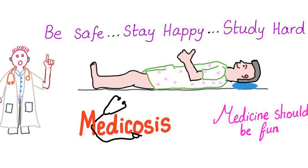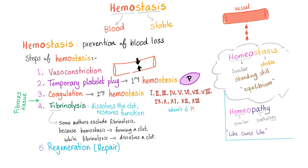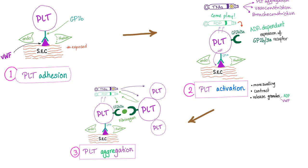As you know, hemostasis has many steps: vasoconstriction, temporary platelet plug, coagulation, and fibrinolysis. Primary hemostasis is the platelet plug — platelet adhesion, platelet activation, platelet aggregation.